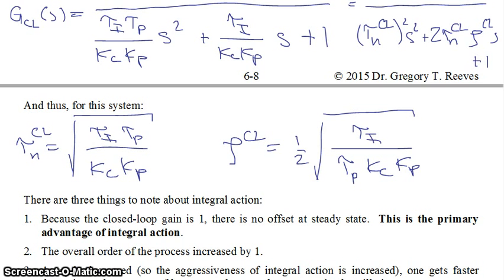Now the overall order of the process is increased by 1. Remember, we started with the first order process, and when we added integral action, we ended up with the second order process.